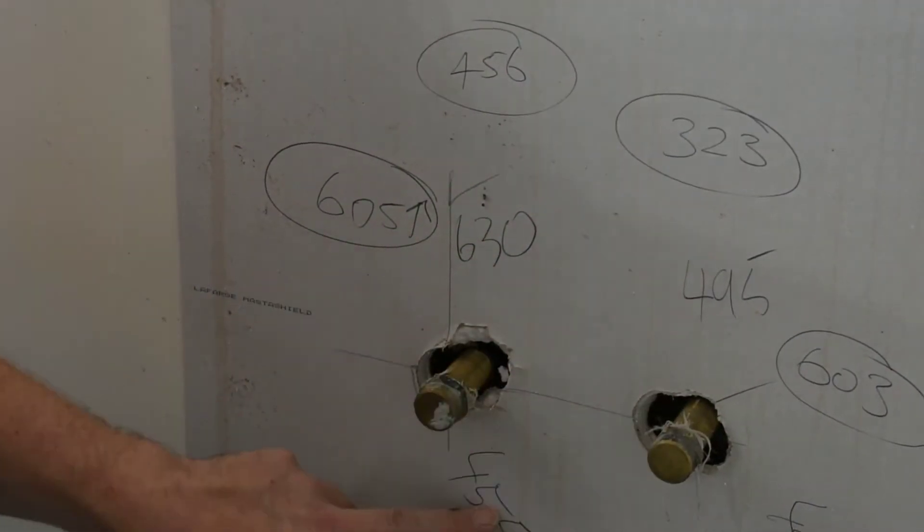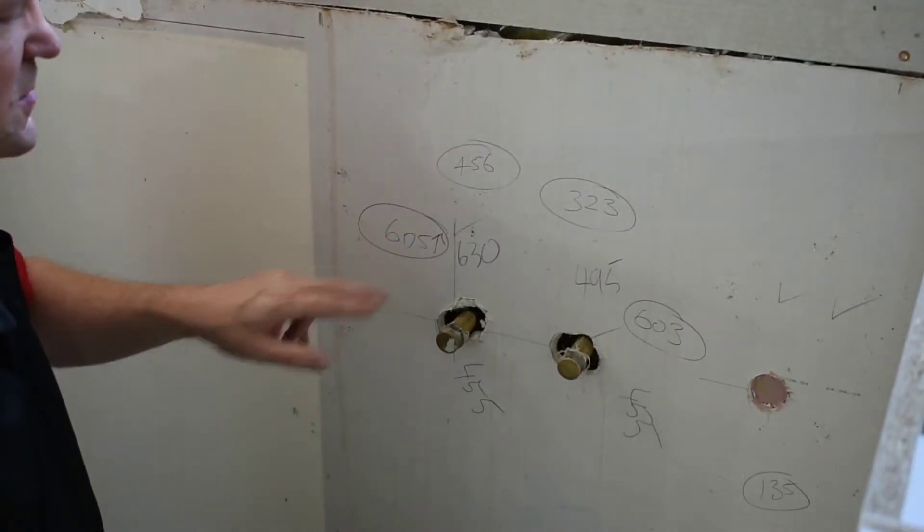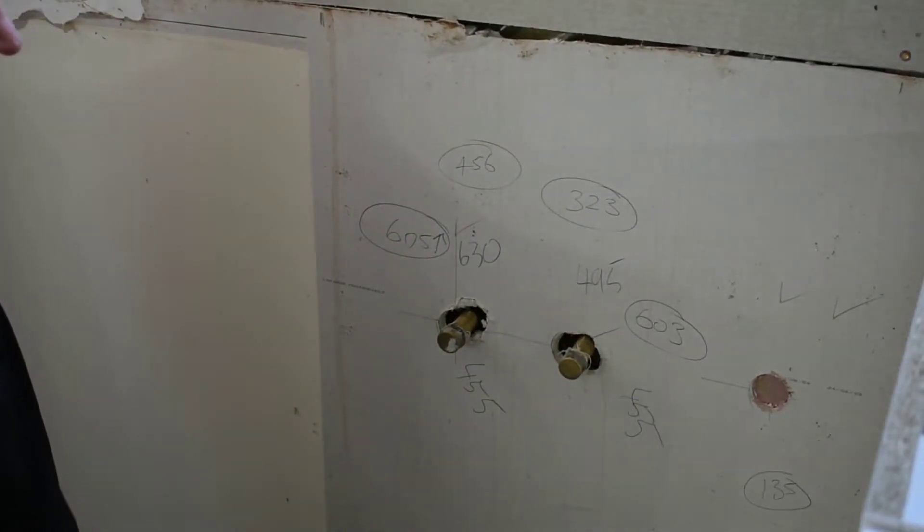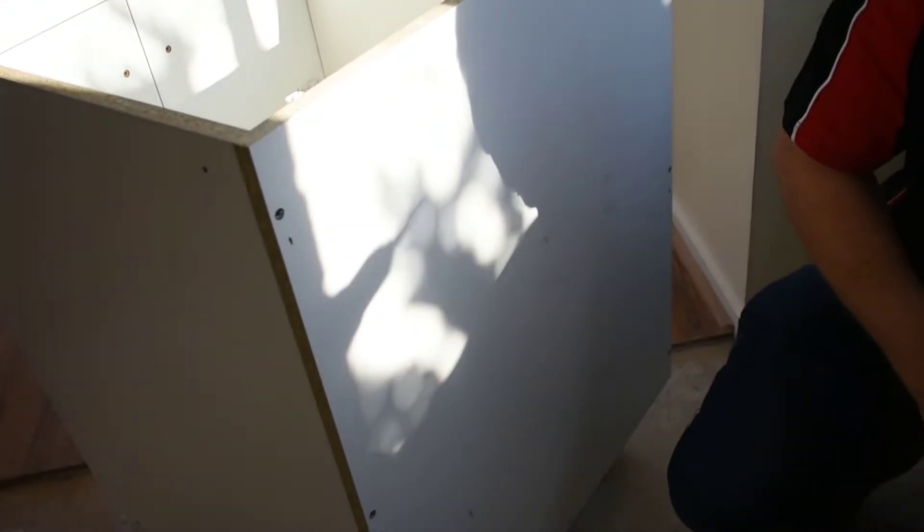It's a good idea that if other people have got measurements on the wall, make sure that your measurements are different to theirs so you don't get confused. These are the holes for the actual hot and cold water.